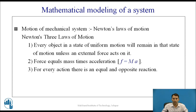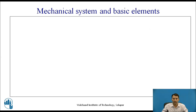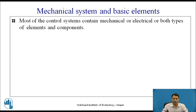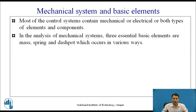Based on these Newton's laws of motion, we are going to find out the mathematical model for a mechanical system. Most control systems contain mechanical, electrical, or both types of elements and components. In the analysis of mechanical systems, three essential basic elements are mass, spring, and dashpot, which occur in various ways.